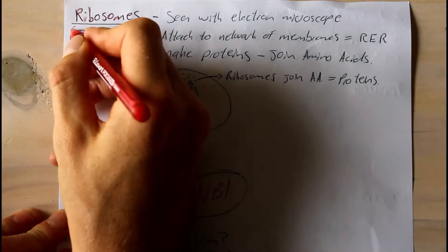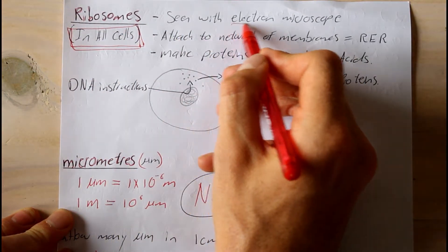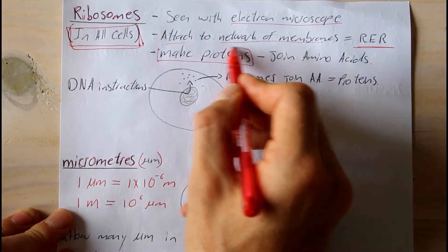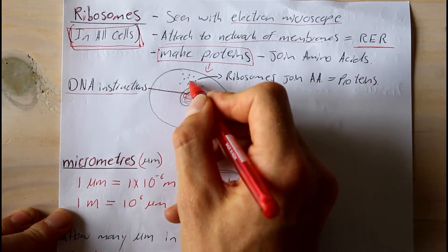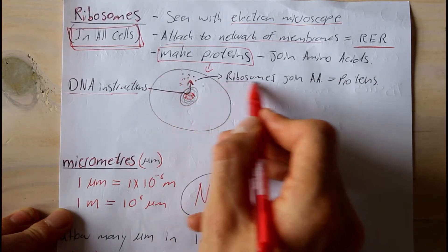Earlier we talked about how the nucleus gives instructions to the cell to make proteins. Proteins are made in our ribosomes. Ribosomes are found in all our cells and they are extremely small — they can only be seen with an electron microscope. Ribosomes can attach to a network of membranes within the cell and form what is called a rough endoplasmic reticulum. Ribosomes make proteins by joining amino acids together, because proteins are simply chains of amino acids joined and folded together. Our DNA gives instructions to make certain proteins.